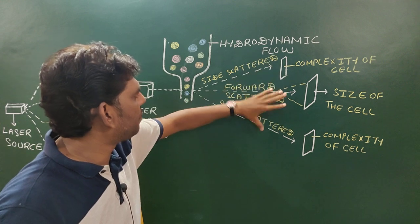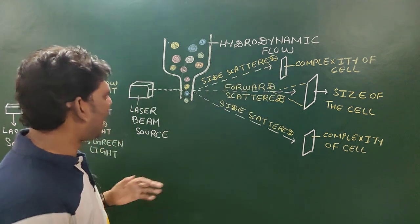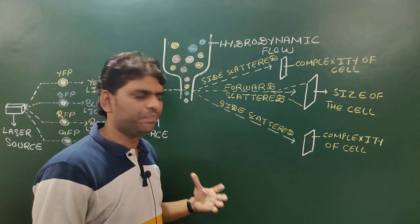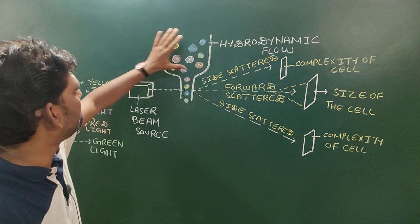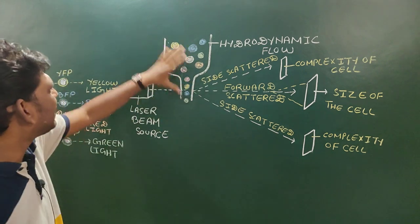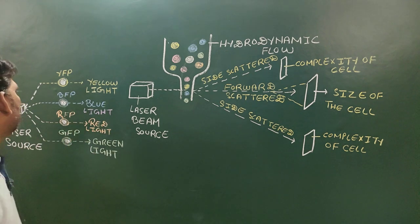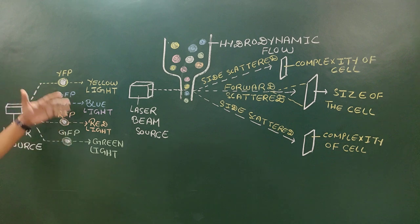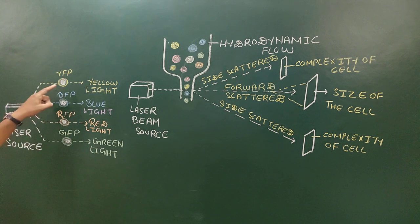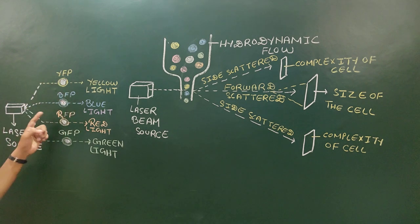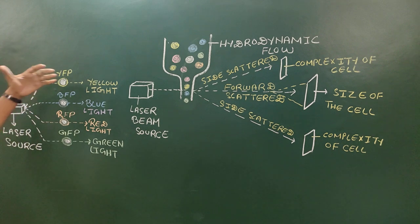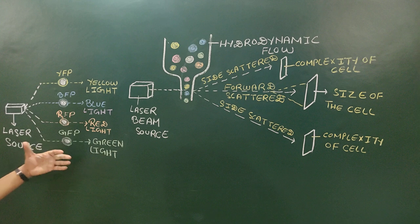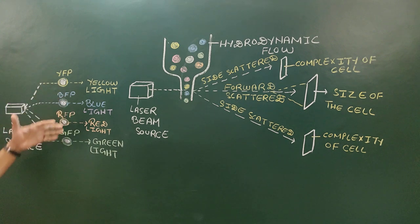Now let's understand how FACS is used in the identification of different types of cells. Suppose we have different kinds of cells and we tag these cells with different kinds of fluorescent proteins. Suppose we have four types of cells: one is tagged with yellow fluorescent protein, the second with blue fluorescent protein, the third with red fluorescent protein, and the fourth with green fluorescent protein.